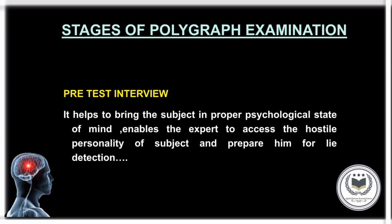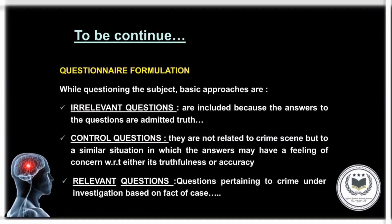The next topic is Stages of Polygraphic Examination. The first stage is the Pre-test Interview, used to bring the subject into the proper psychological position to help the expert assess the personality of the subject and prepare him for the detection. Questionnaire Formulation: While questioning the subject, three basic approaches are used. First, irrelevant questions — included because answers to these questions are admitted truths. Second, control questions — not related to the crime but to a similar situation where answers may cause concern regarding their truthfulness or accuracy. A recent development uses questions where the subject is directed to tell a lie as a controlled question, to reveal the pattern of physiological response when a person lies.